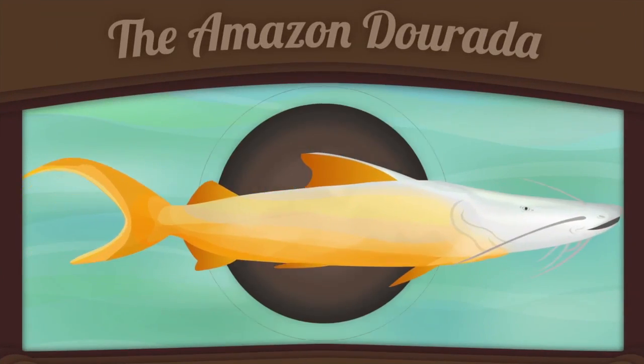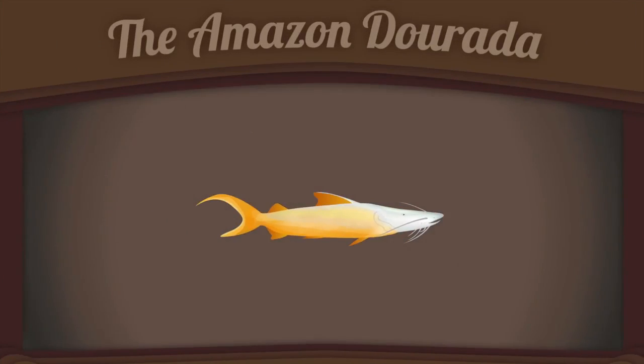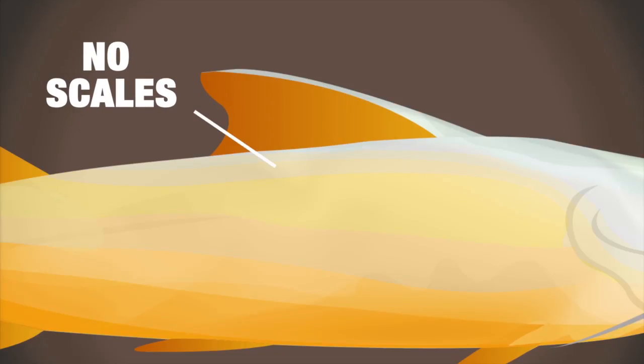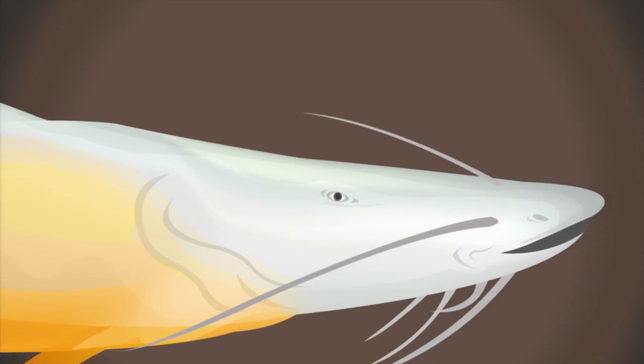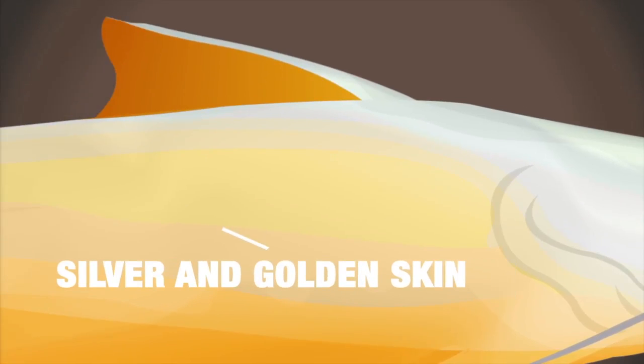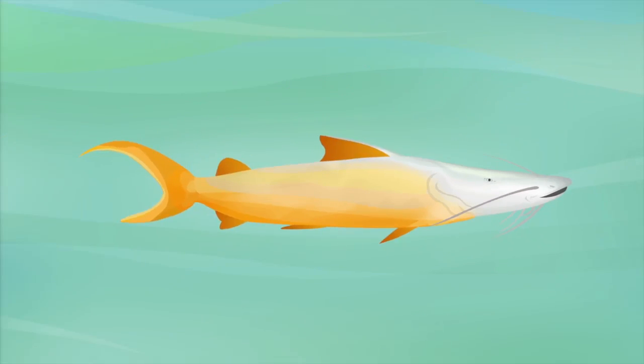Let us begin by learning what this great traveler looks like as an adult. The Dorada has no scales. It has white meat, whiskers, and a silver and golden skin that gives the appearance of a fast swimmer.